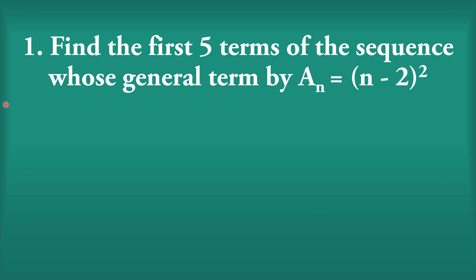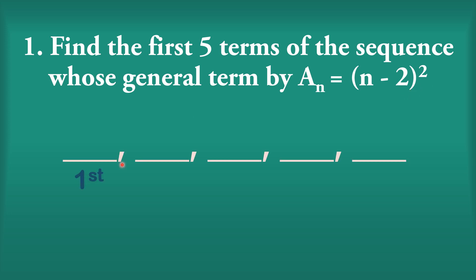Let us find the first 5 terms of the sequence whose general term a sub n is equal to (n minus 2) squared. For the first term, replace n by 1: 1 minus 2 gives negative 1. Negative 1 times negative 1 is positive 1.